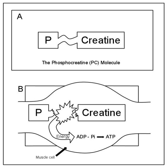Three methods can synthesize ATP. The ATP-CP system is used for durations of up to 10 seconds. The ATP-CP system neither uses oxygen nor produces lactic acid if oxygen is unavailable, and is thus said to be alactic anaerobic.